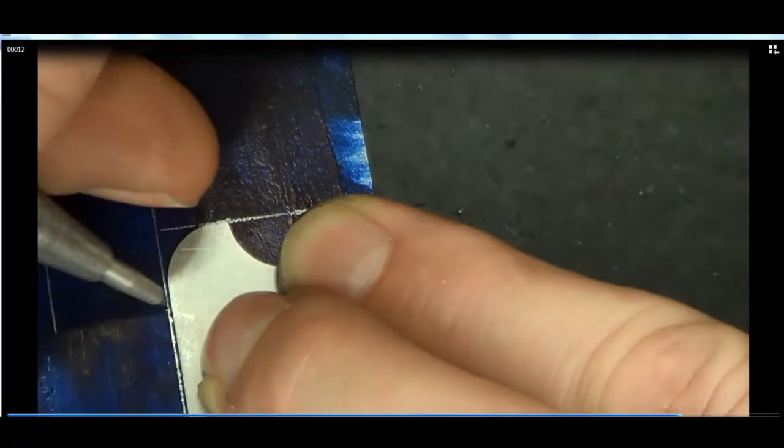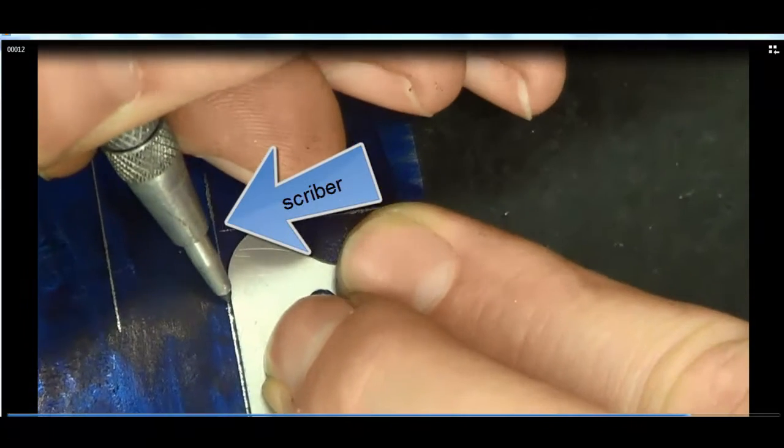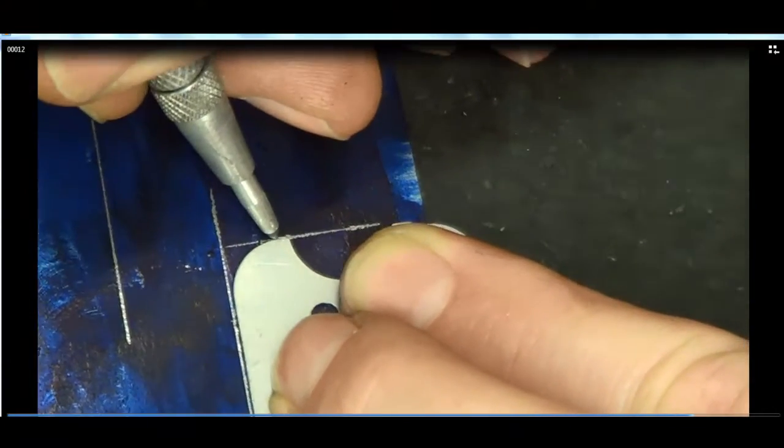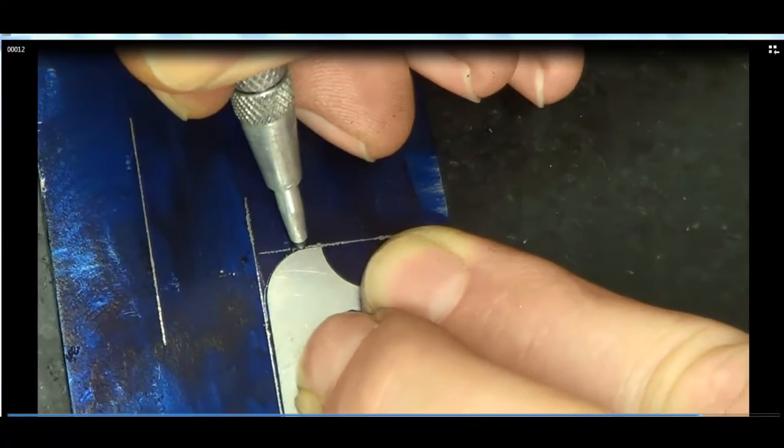Once we know that we can effectively sweep this radius with our scriber and make sure that we're tangent, we'll go ahead and make it so.